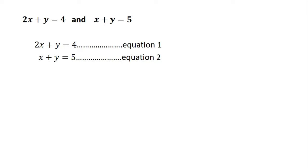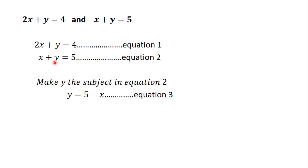I'll call the first one equation 1, then the second one equation 2. Now using the substitution method, you have to make one of the variables the subject in one equation. The variables in this equation are x and y. So you either make x the subject in equation 1, or you make y the subject in equation 1. You can also make x the subject in equation 2, or make y the subject in equation 2. I'm going to choose equation 2.